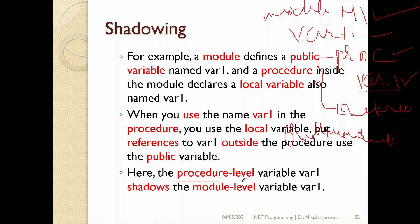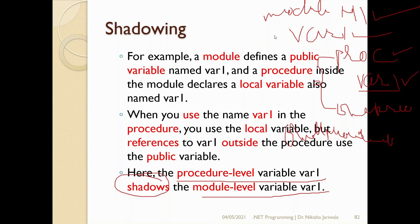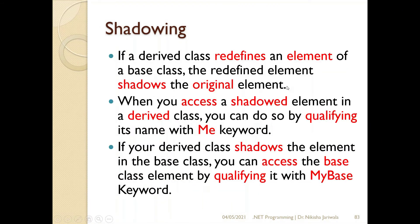So this is how the compiler uses the closer scope. The procedure-level VAR1 variable shadows the module-level VAR1 variable. We have seen this example within a module.